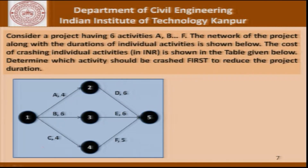Let us look at an example to explain this concept. Consider a project having 6 activities A, B, C, D, E, F and the network of the project along with the durations of the individual activities is shown here. The cost of crashing individual activities — given in Indian rupees — is shown in the table below.